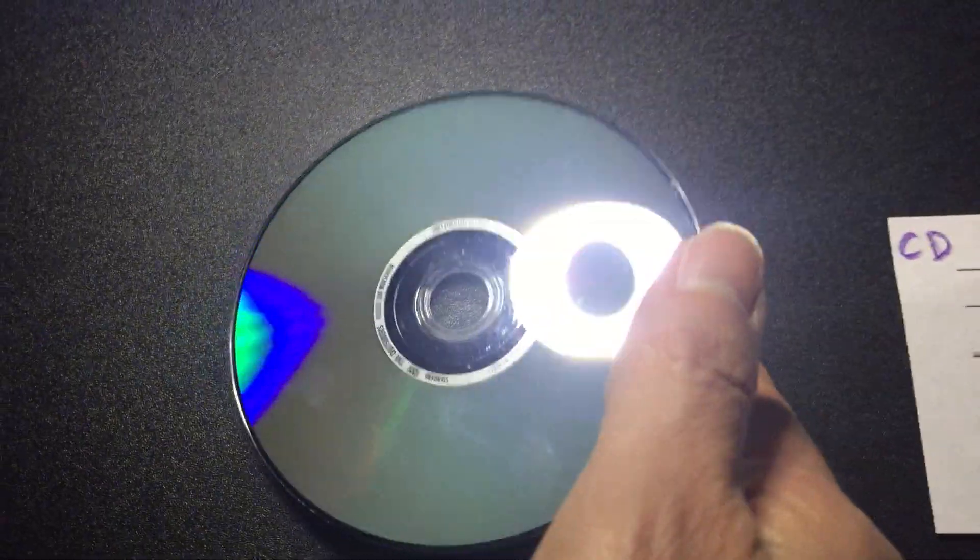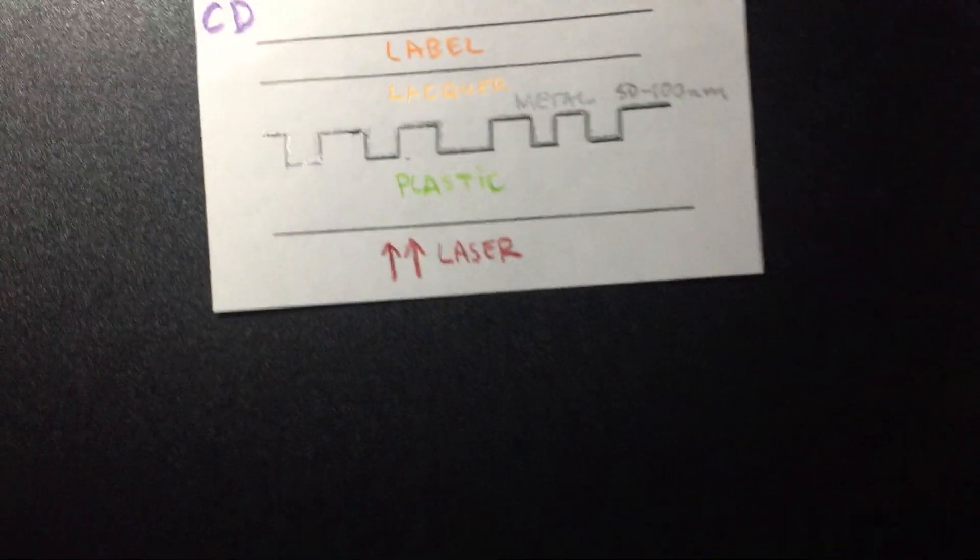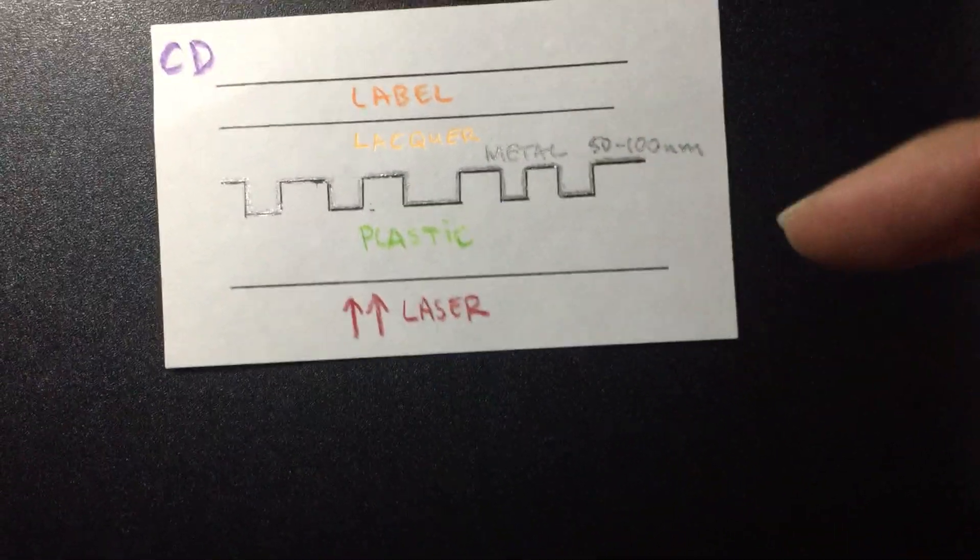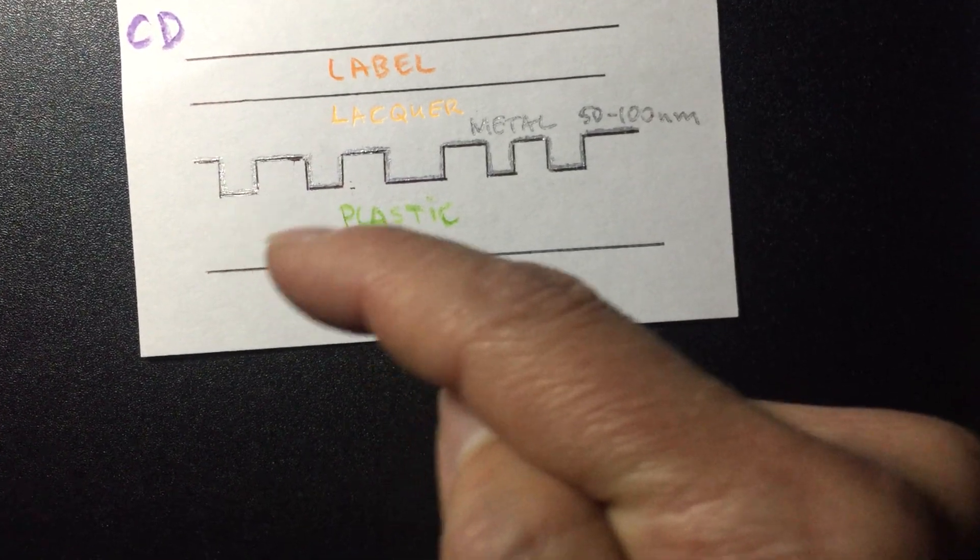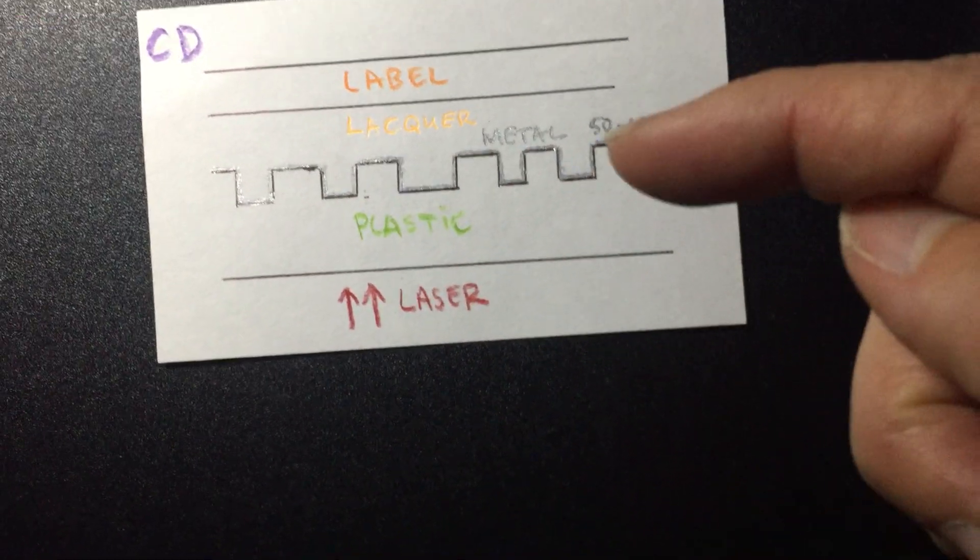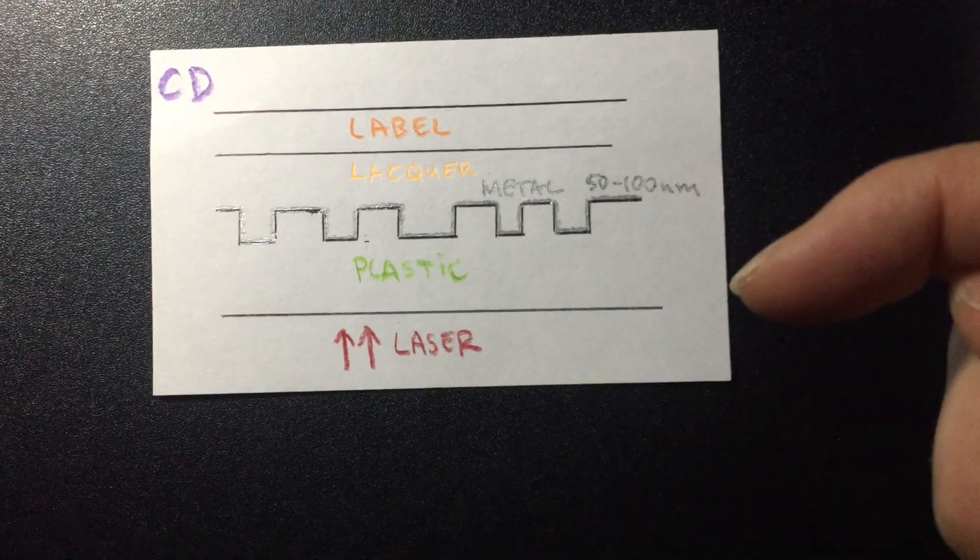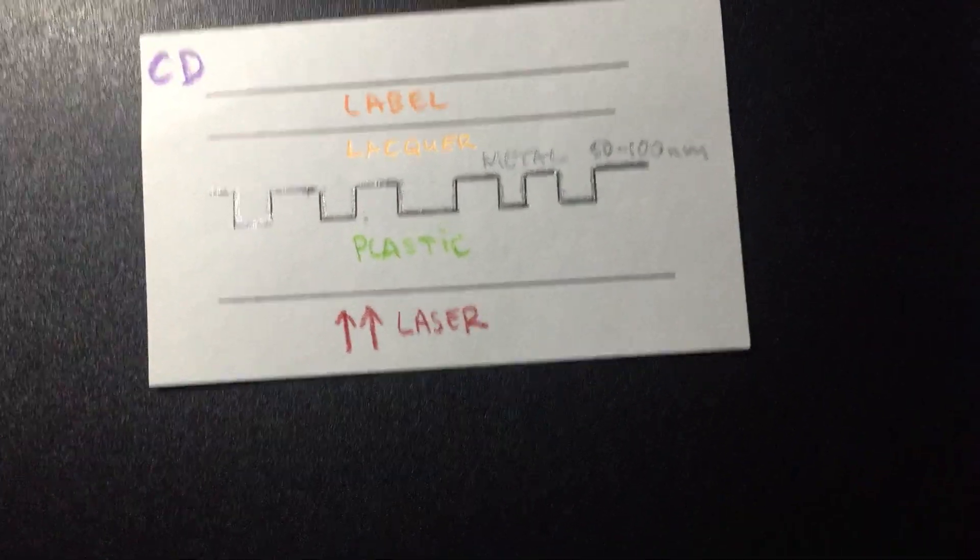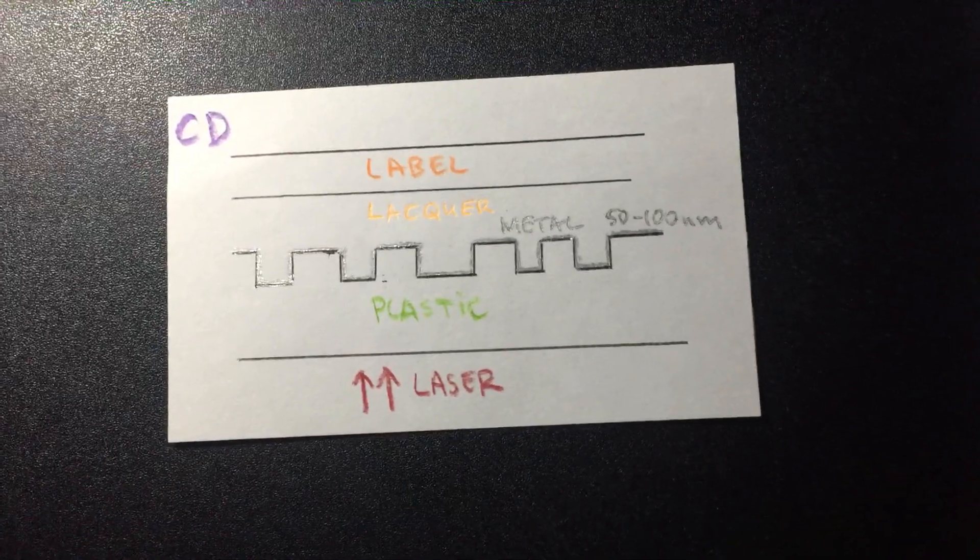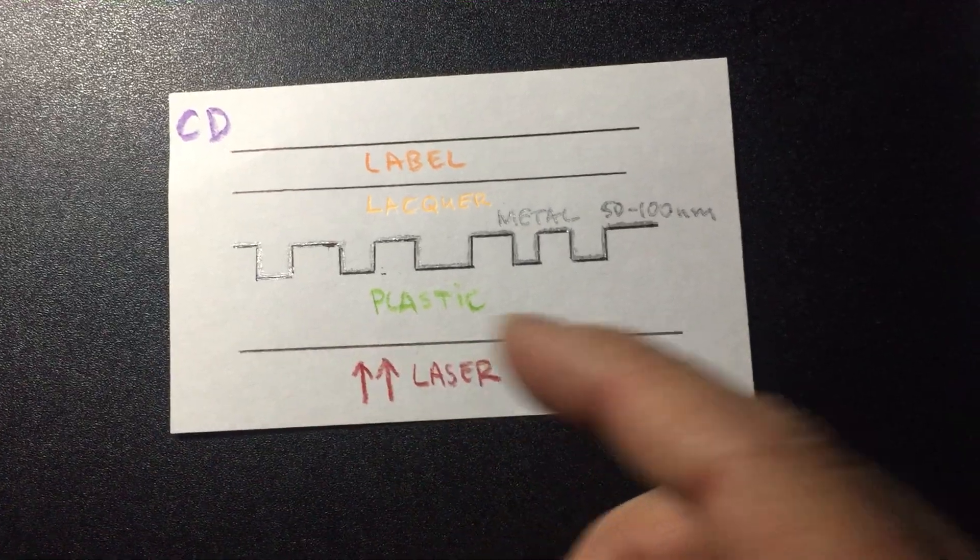The structure of the CD is something like this: you have a label, a little bit of plastic lacquer on the top, and then you have a very thin layer of metal that gives it its reflective property. That's only about 50 to 100 nanometers thick and has been deposited over plastic.